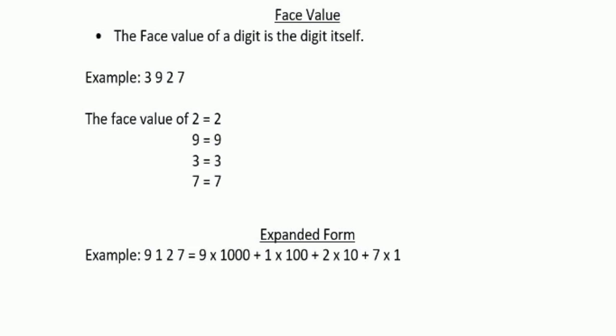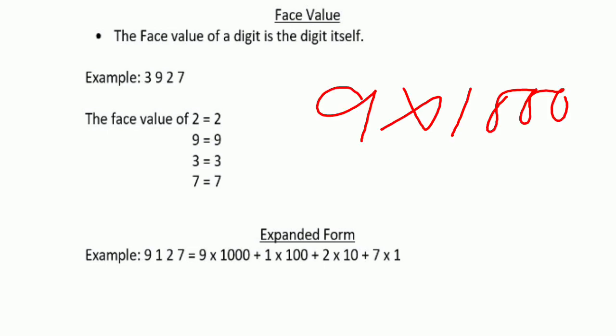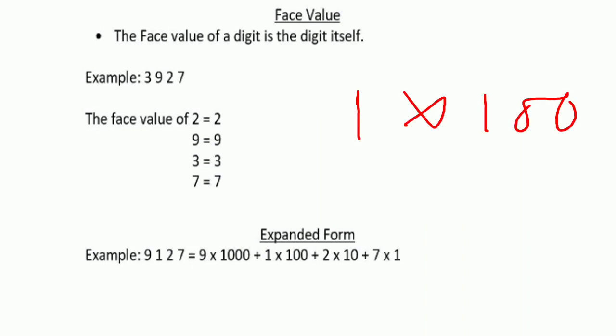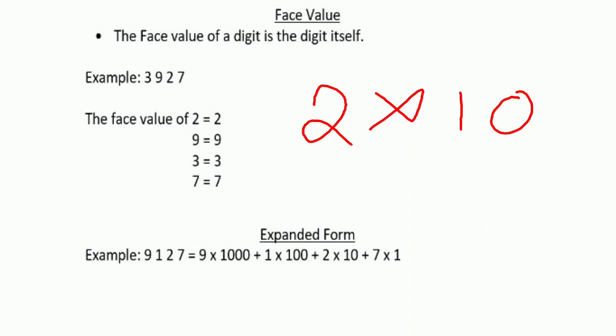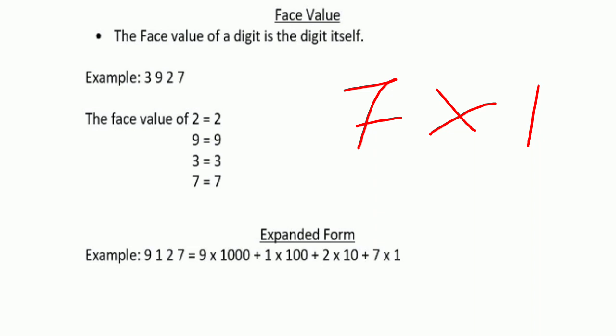Next, we have the expanded form of a number. Consider the number 9127. In this number, 7 is at units place, 2 is at tens place, 1 is at hundreds place, and 9 is at thousands place. So we write it as 9 × 1000 + 1 × 100 + 2 × 10 + 7 × 1.